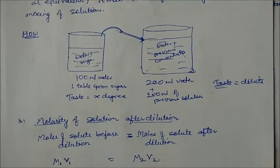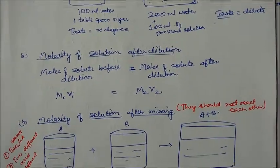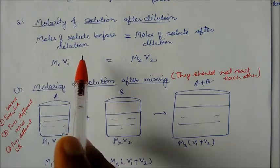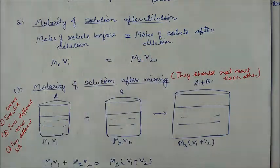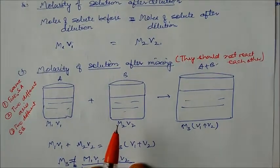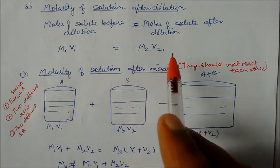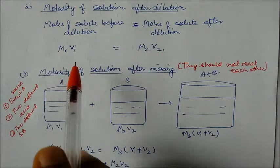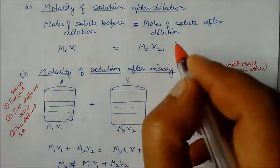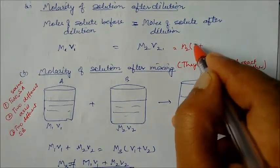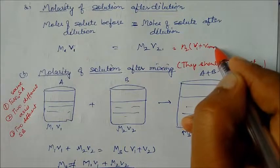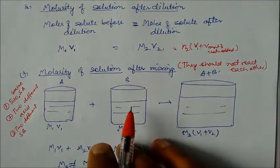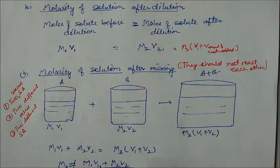This is the main principle of dilutions. For molarity of solutions after dilution: moles of solute before dilution equal moles of solute after dilution. So we use M1V1 = M2V2, where M1 and V1 are before dilution and M2, V2 are after dilution. V2 is V1 plus V, where V is the amount of water added.